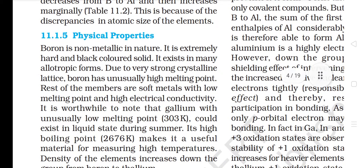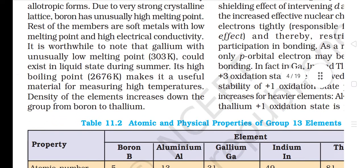11.1.4 Physical Properties: Boron is non-metallic in nature — it is an extremely hard, black colored solid that exists in many allotropic forms. Due to its very strong crystalline lattice, boron has an unusually high melting point. The rest of the members are soft metals with low melting points and high electrical conductivity. Gallium has an unusually low melting point and could exist in liquid state during summer, while its high boiling point makes it useful for measuring high temperatures. Density of the elements increases down the group from boron to thallium.